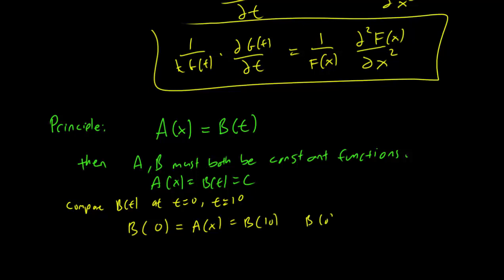So in other words, B(0) is equal to B(10). B doesn't change between time 0 and time 10. So just because setting these two equal to each other implies that they must both be constant.